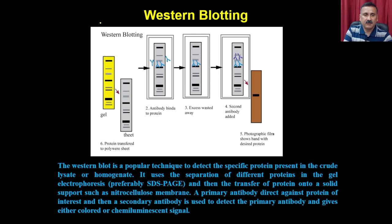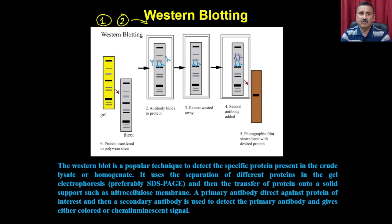Now in this particular lecture, we are going to discuss how to perform western blotting. We assume that your gel is ready with the protein resolved, and you can use these gels for performing western blotting. In western blotting, step one is to resolve the sample onto an SDS-PAGE to see a pattern. Then you transfer the proteins onto a nitrocellulose membrane, do a primary treatment, secondary treatment, and use a suitable substrate to see the bands.